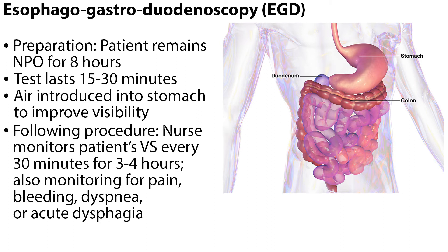To prepare for an EGD, the nurse instructs the patient to remain NPO for 8 hours prior to the test. The test usually lasts 15 to 30 minutes and involves introducing air into the stomach to improve visibility, causing the patient to feel pressure or fullness. Following the procedure, the nurse monitors the patient's vital signs every 30 minutes for 3 to 4 hours, while also monitoring for signs of pain, bleeding, dyspnea, or acute dysphagia.